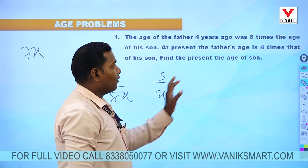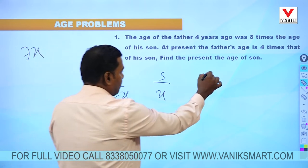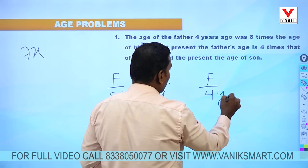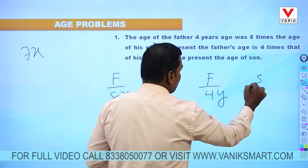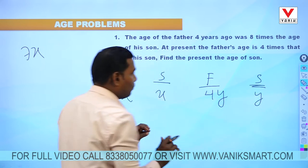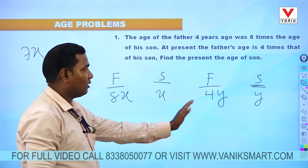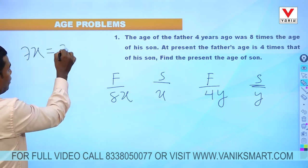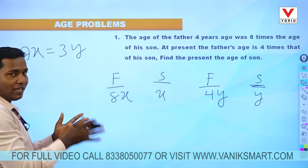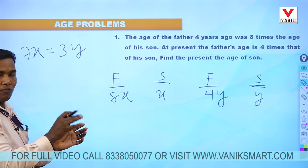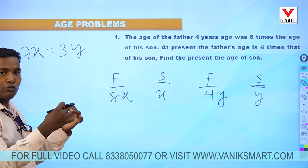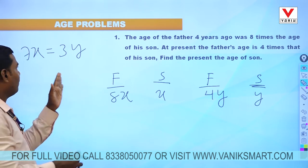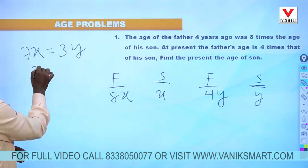At present, the father's age is 4 times the son's age. Suppose father's age is 4y and son's age is y. The difference between father and son is 3y. Since the difference 4 years ago equals the present difference, 7x equals 3y.